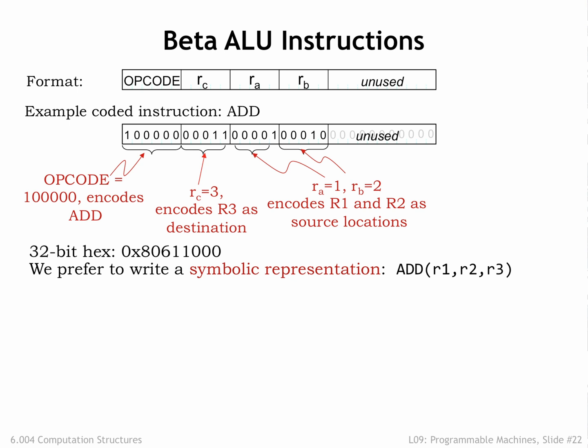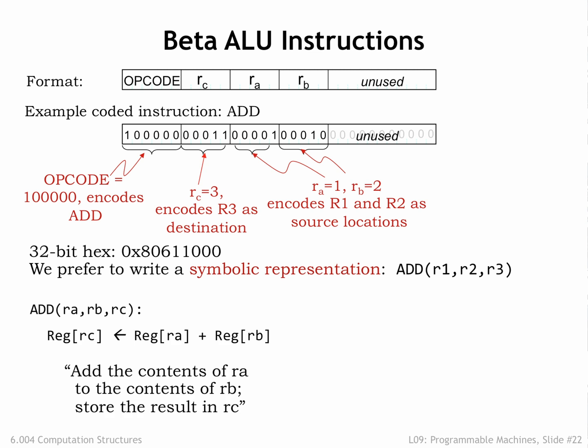Since it's tedious and error-prone to transcribe 32-bit binary values, we'll often use hexadecimal notation for the binary representation of an instruction. In this example, the hexadecimal notation for the encoded instruction is 80611000. However, it's much easier if we describe the instructions using a functional notation — for example, ADD R1, R2, R3. Here we use a symbolic name for each operation called a mnemonic. For this instruction the mnemonic is ADD, followed by a parenthesized list of operands: the two source operands R1 and R2, then the destination R3. So ADD RA, RB, RC is shorthand for asking the Beta to compute the sum of the values in registers RA and RB, writing the result as the new value of register RC.